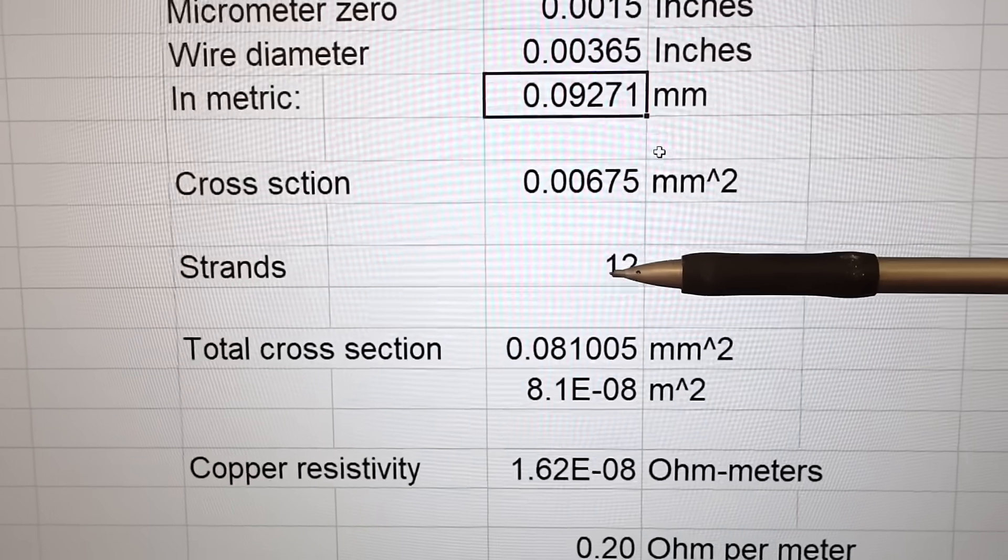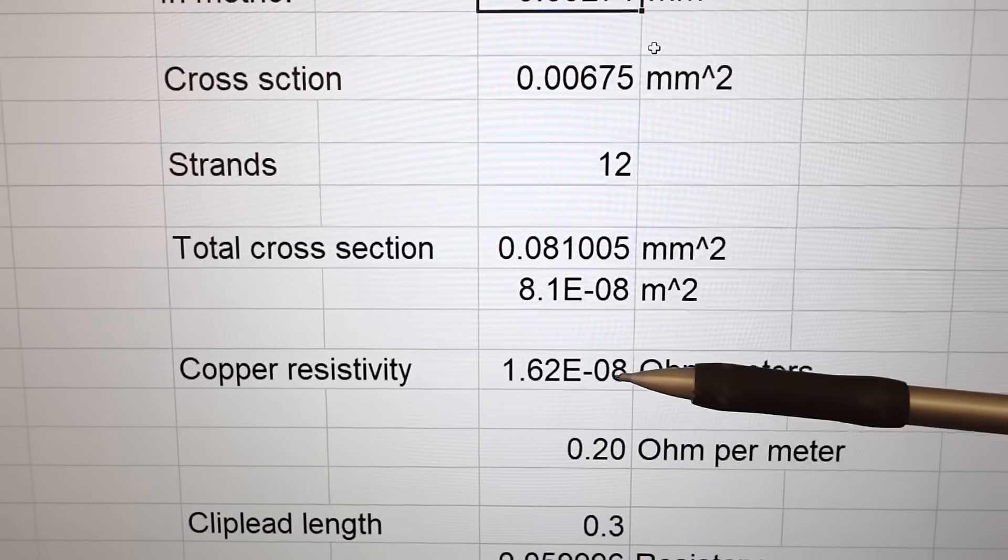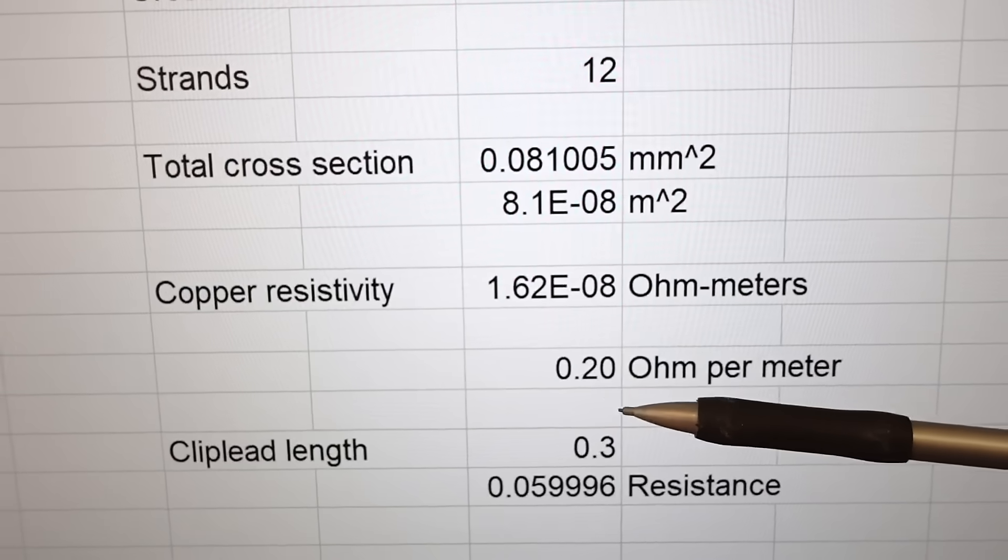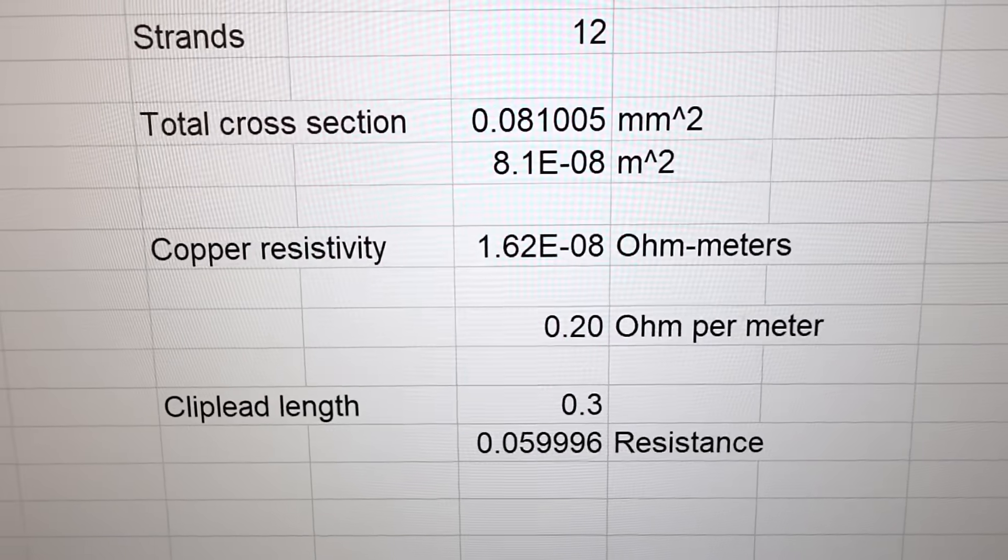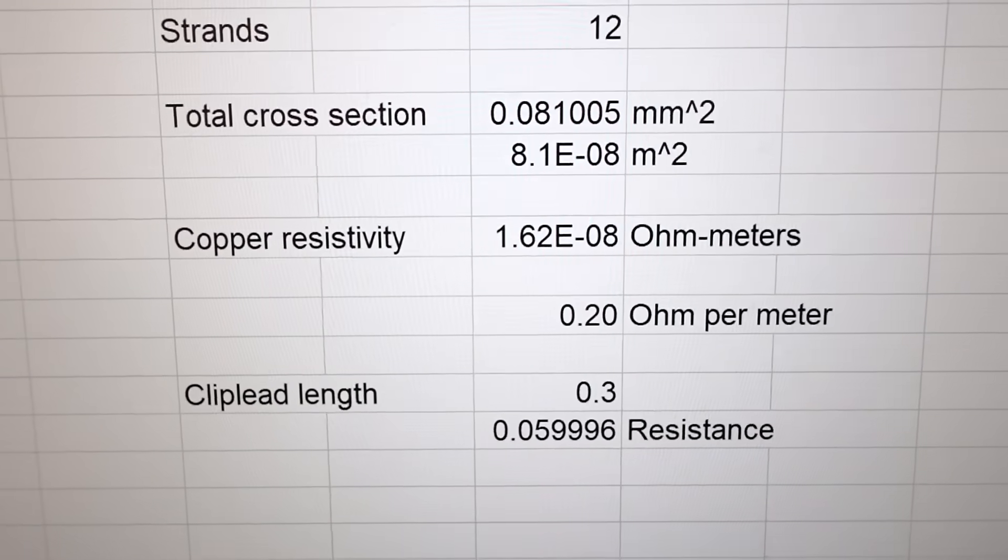Worked out the cross-sectional area. There's 12 strands. Total cross-section. Then, convert that to square meters. Resistivity. Looked it up on the internet. So, I should be getting 0.2 ohms per meter. Or, with a 30 centimeter clip lead length, I should be getting 59 milliohms. But, I'm getting a lot more than that.